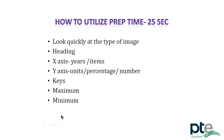Next is how to utilize preparation time. First, look quickly at the type of image. Next, look at the heading of the image. Then look at the x-axis — sometimes years, items, weeks, or a time frame is given there. Then look at the y-axis — sometimes units, percentage, or numbers are given. Look for the keys mentioned on the bottom or left side of the graph. And look for the maximum and minimum figures. These seven things are very crucial to notice because if you prepare them, you will be able to speak clearly and properly in the next 40 seconds.